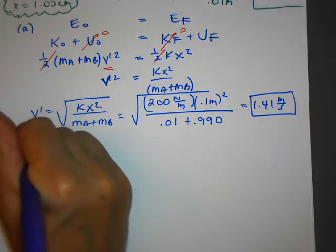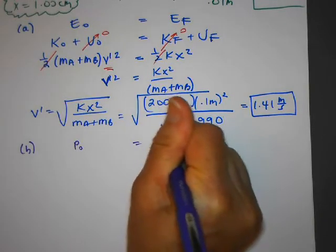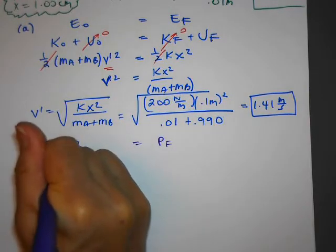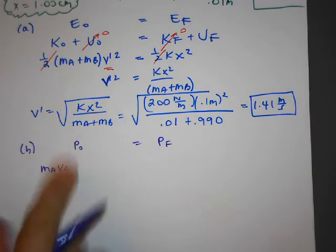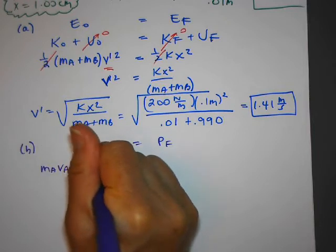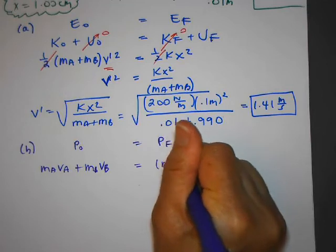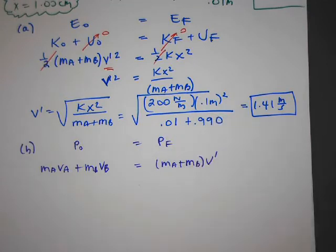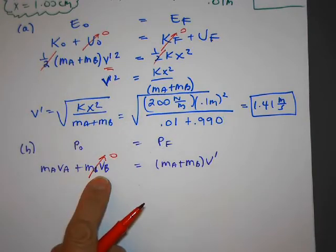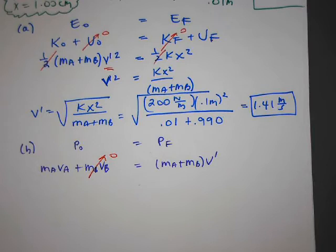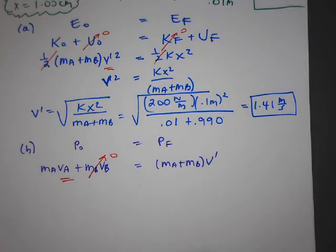So for part b, I'm going to say the total momentum before is equal to the total momentum after. So I'm going to have mava, that's the mass of the bullet, plus the velocity of the bullet, plus the mass of the block times the velocity of the block, is equal to the combined mass times v prime, which I already found. Now, the block is initially at rest. So because vb is 0, the whole term goes to 0. And now I'm going to rearrange the equation to solve for the unknown in terms of the known, and solve for va.